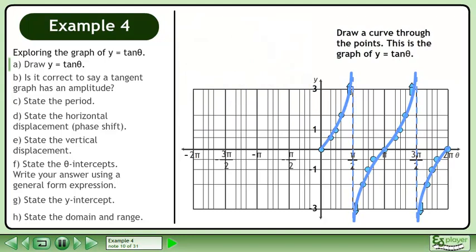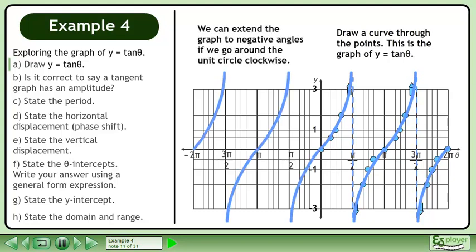Draw a curve through the points. This is the graph of y equals tan theta. We can extend the graph to negative angles if we go around the unit circle clockwise.